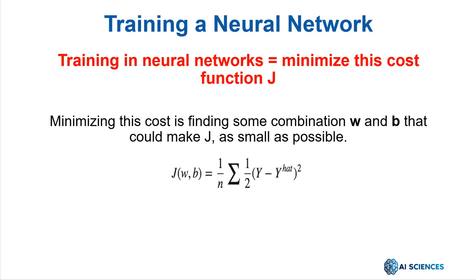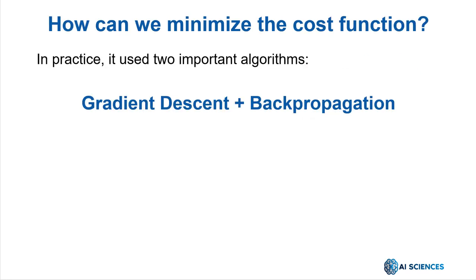Training in neural networks simply means minimizing this cost as much as possible. Minimizing this cost is finding some combination of weight w and bias b that could make our cost j as small as possible. How can we minimize this cost function? In practice, it uses two important algorithms — gradient descent and backpropagation — to minimize the cost function.